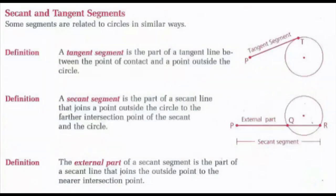Next, looking at secant and tangent segments. Just like secant and tangent lines, we can also have segments. A tangent segment is the part of a tangent line between the point of contact and a point outside the circle — T is the point of contact and P is the point outside, making tangent segment PT. A secant segment joins a point outside the circle to the farther intersection point; PR is the entire secant segment, and PQ is the external part of secant segment PR.